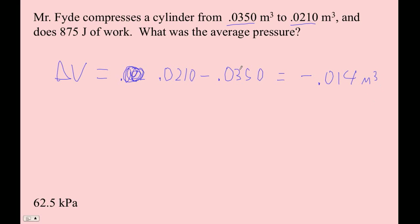And then the work is 875 joules. So what's the average pressure? Or what's the pressure, assuming it stays constant? So work is pressure times change in volume. Therefore, pressure is work divided by change in volume.